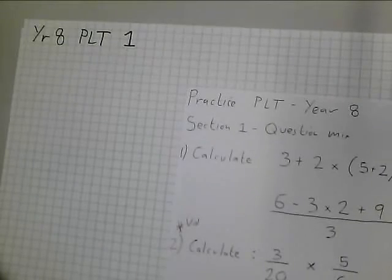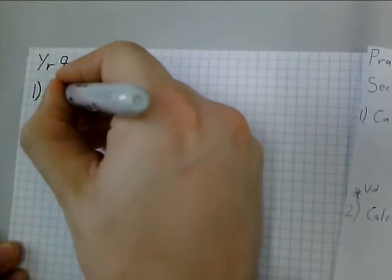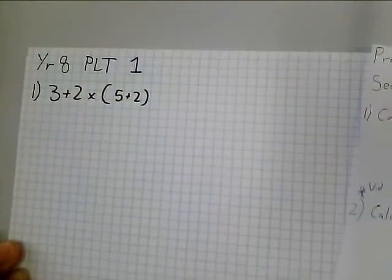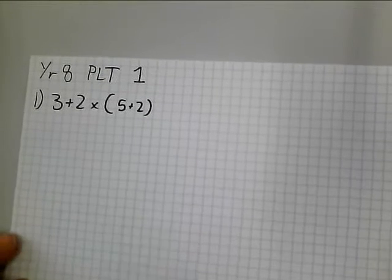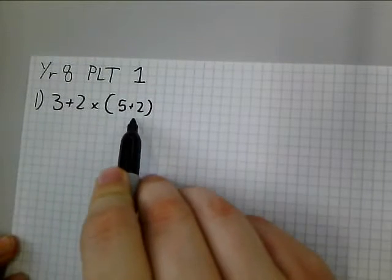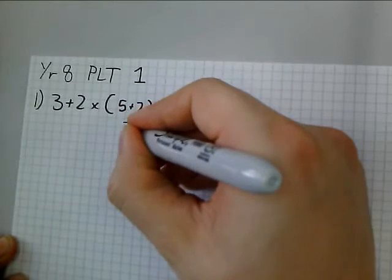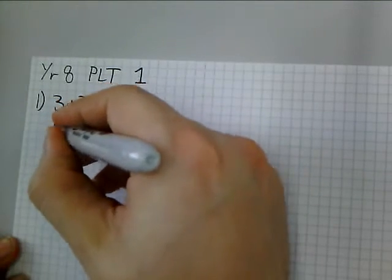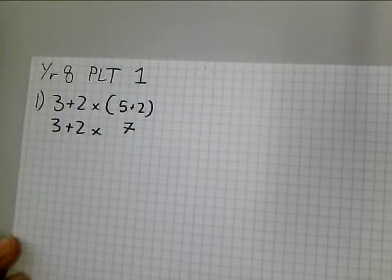We're going to look at question 1. So we are being asked to calculate 3 plus 2 times in brackets 5 plus 2. And this is without a calculator. So I know that I want to do bits inside the bracket first, so I'm going to evaluate the 5 plus 2, and that gives me 7.